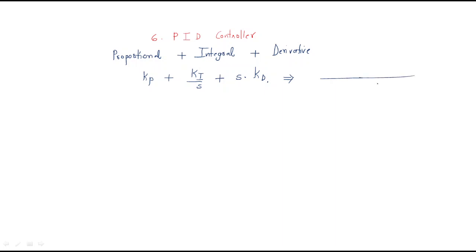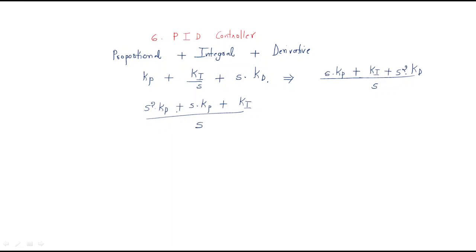If we elaborate the PID expression, the LCM is S. This gives us S·KP plus KI plus S²·KD, all over S. Arranging in order of S: the numerator is KD·S² + KP·S + KI, divided by S. This is the complete structure of the PID controller.